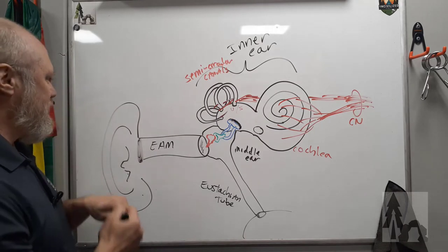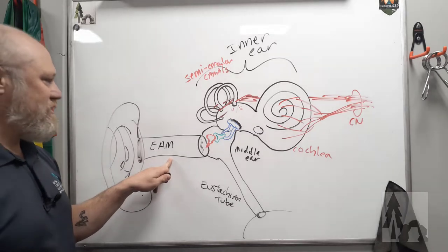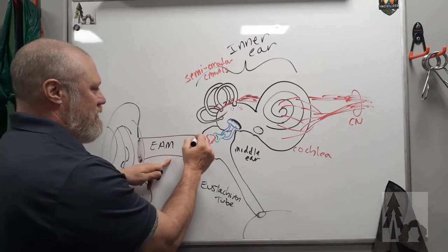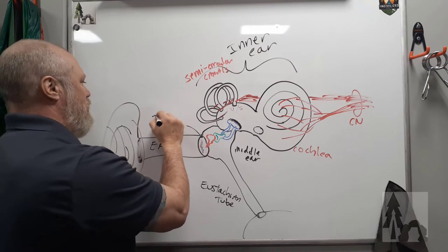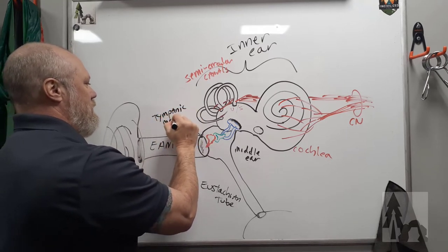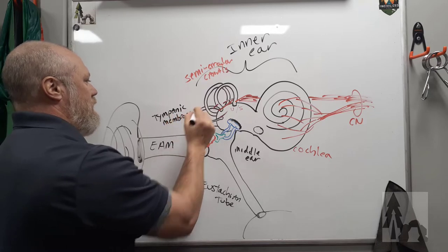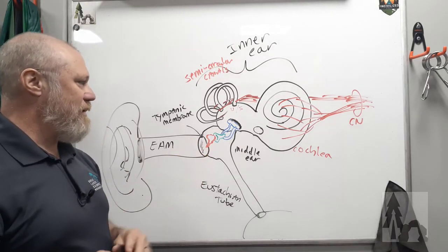How it works is sound waves will come, and they're directed into the external auditory meatus, and they're going to travel down this canal, and they're going to vibrate this structure called a tympanic membrane. Tympani, same root word, so you'd probably know this more familiar as the eardrum. That's the tympanic membrane.